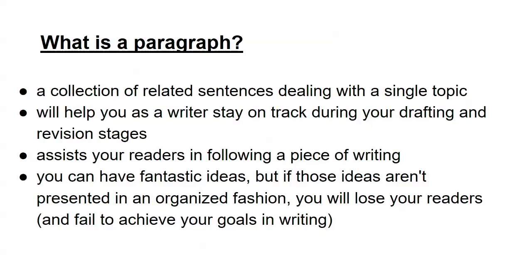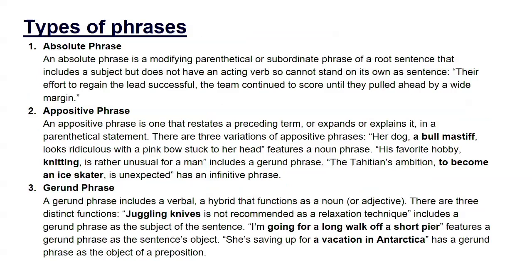Types of phrases: there is an absolute phrase, an appositive phrase, and a gerund phrase. An absolute phrase is a modifying, parenthetical, or subordinate phrase of a root sentence that includes a subject but does not have an acting verb, so it cannot stand on its own. Example: 'Their effort to regain the lead successful, the team continued to score until they pulled away by a wide margin' — 'their effort to regain the lead successful' cannot stand on its own.